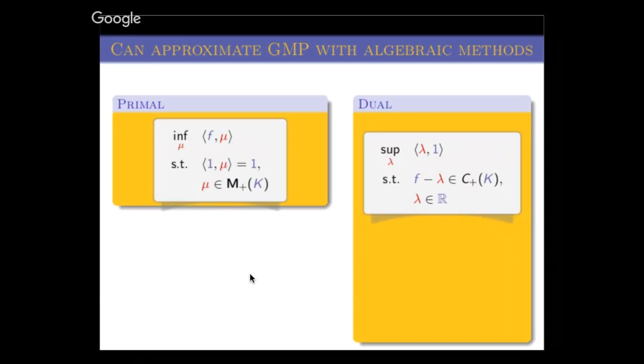If you go back to polynomial optimization, it's very easy—it's a linear program, so you have a dual problem. The dual problem looks like that. The dual cone of measures is the continuous functions. You want to maximize some parameter lambda such that f minus lambda is a non-negative function.